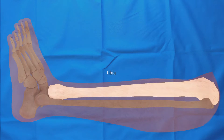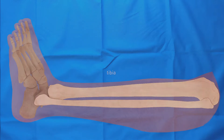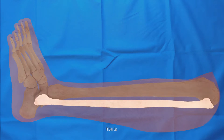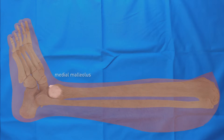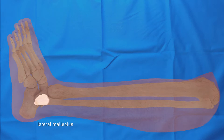The tibia is the anteromedial lying bone of the leg and the fibula is the posterolateral lying bone of the leg. The medial malleolus is an elevation on the medial distal end of the tibia, while the lateral malleolus is an elevation on the lateral distal end of the fibula.